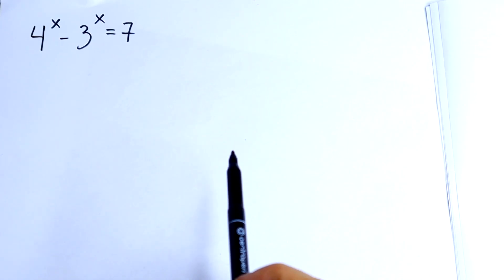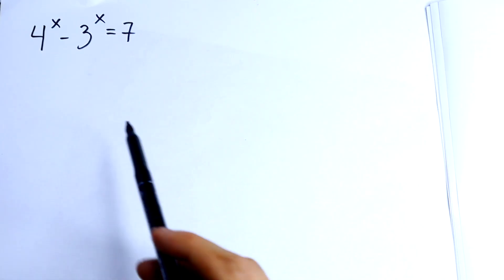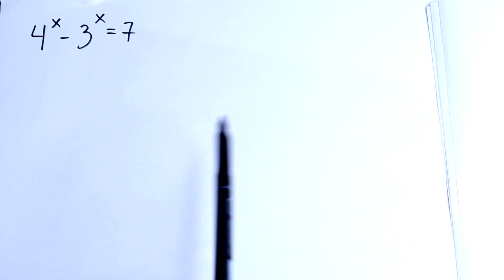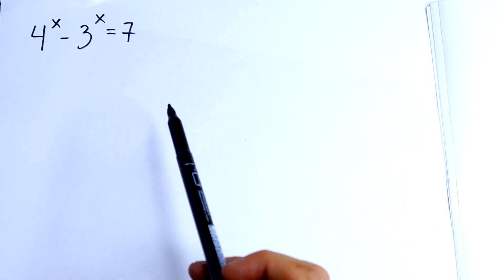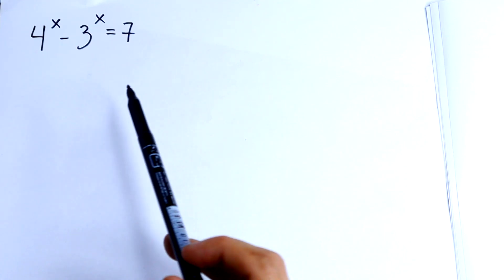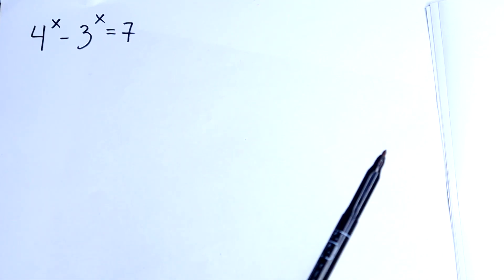Hello math lovers, welcome back to Math Mood. Here we have an interesting exponential equation: 4 to the power x minus 3 to the power x equals 7.